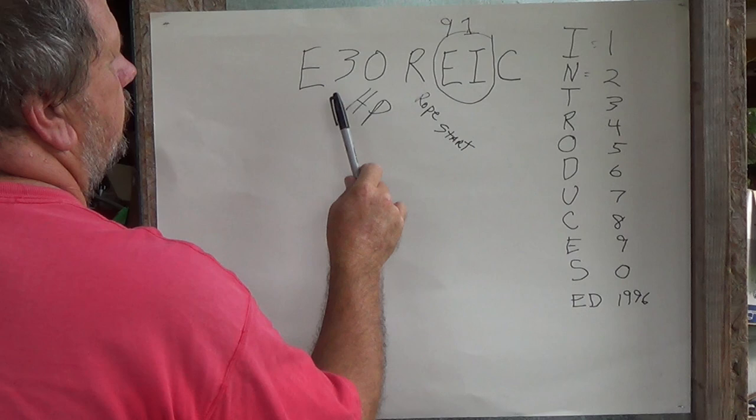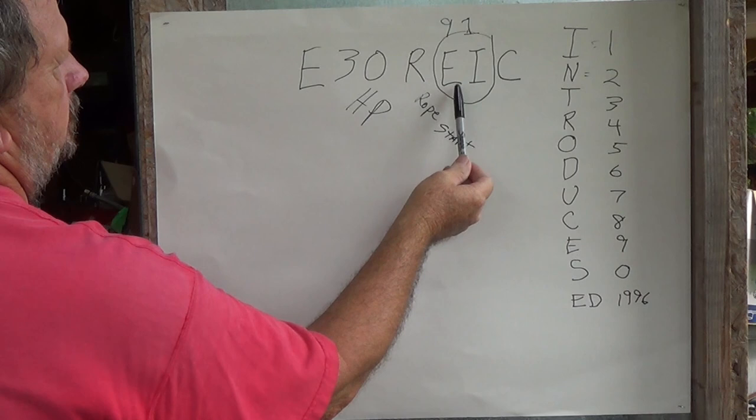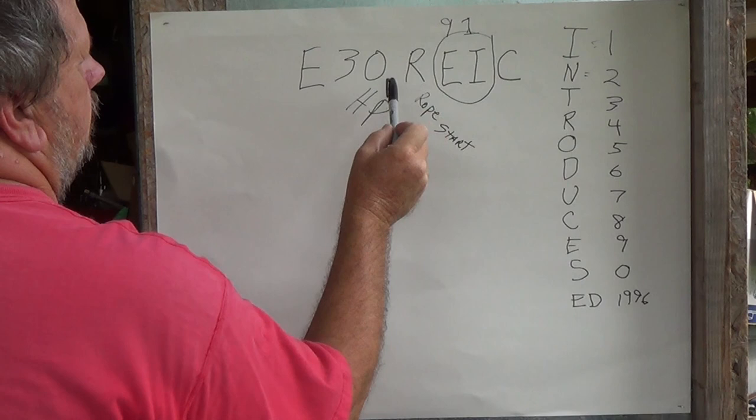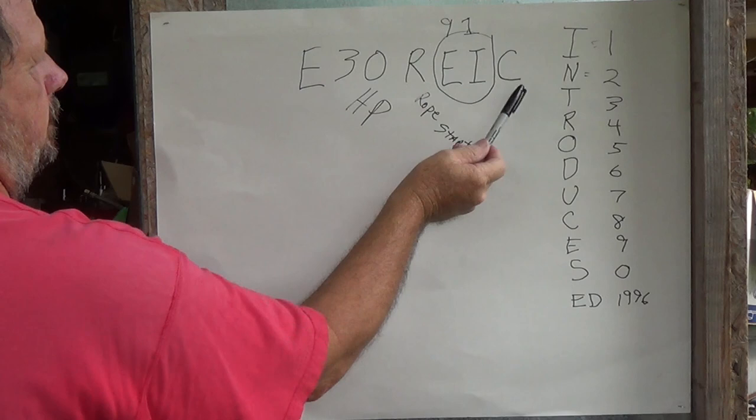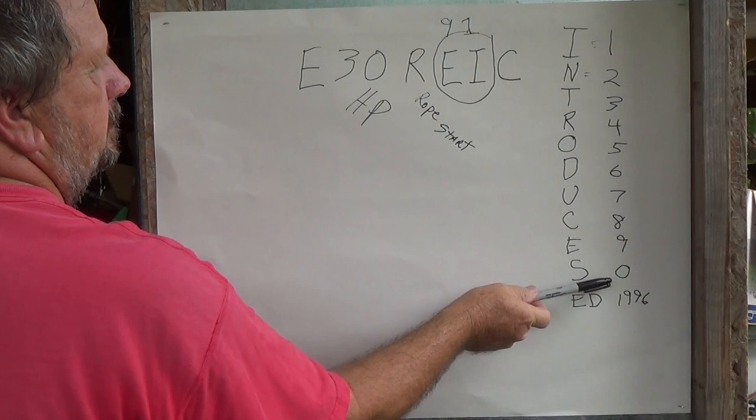So this model number tells you a lot, but anybody that's looking for the year, it would be right here. The last three - it would be before the end, because like I said there could be one here, there could be more numbers there, but if you count back three from the end and do that, you're going to come up with your year using INTRODUCES.